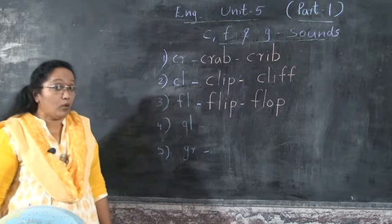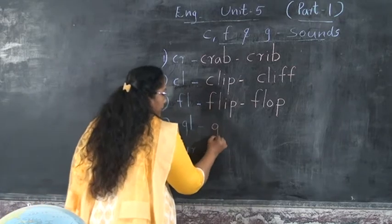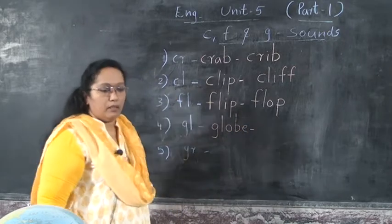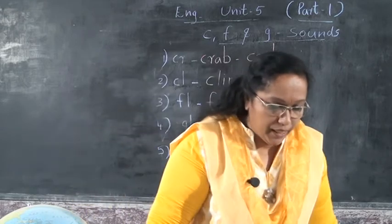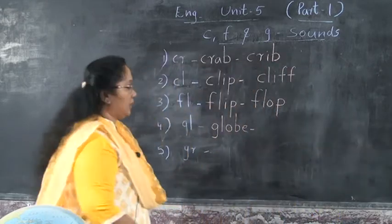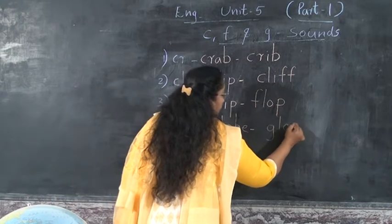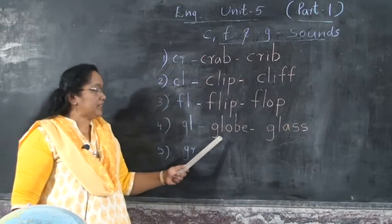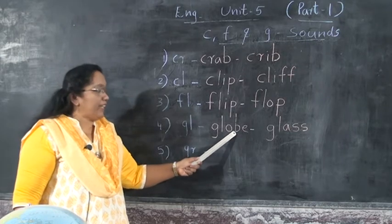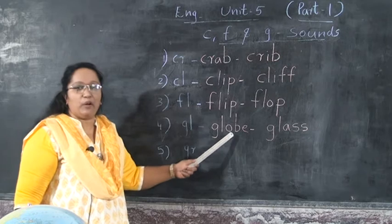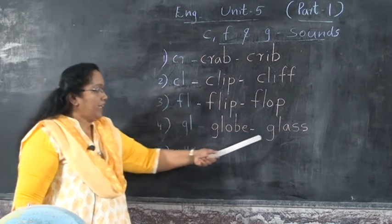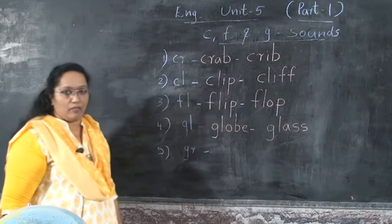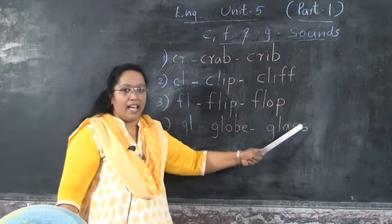GL — globe. Globe. G-L-O-B-E. Globe. What, children? G-L-O-B-E. Globe. And glass. Glass. G-L-A-S-S. Say loud. What's the spelling of globe? G-L-O-B-E. G-L-O-B-E is globe. Next — glass. G-L-A-S-S. Glass. What's the spelling of glass? G-L-A-S-S.